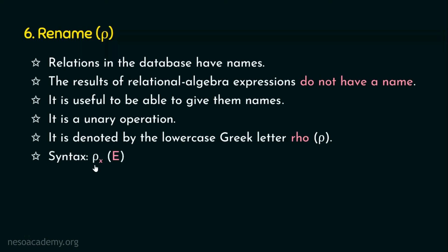The syntax is: rho with x in the subscript, applied to an expression. This expression is a relational algebra expression. When this relational algebra expression is evaluated, the output is a table. That output table will generally not have a name, and we give a name to it. The output table is renamed as x, so x is the new table name. The output of the relational algebra expression is a table, and we assign a name to that table using the rename operator rho.